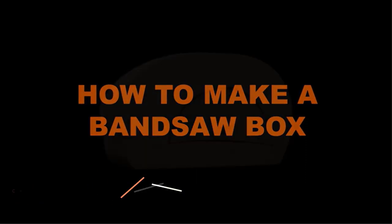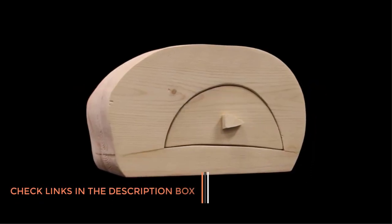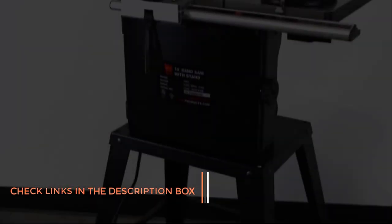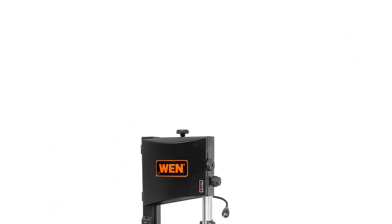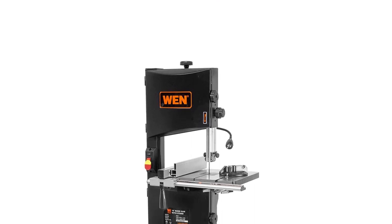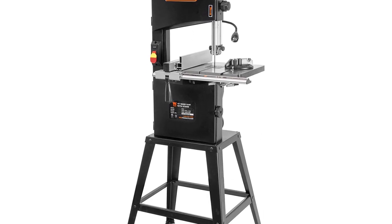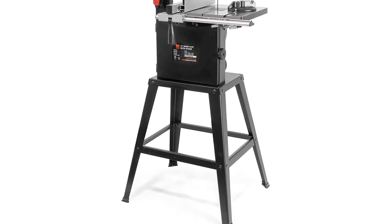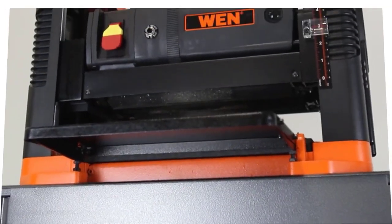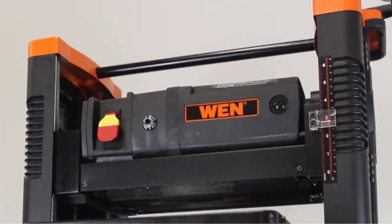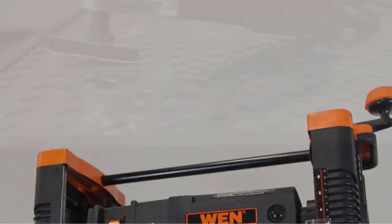It has a beveling table up to 45 degrees and a workspace size of 14 1/8 x 12 1/2 inches. This unit accommodates up to 72-inch blades with 1/8 to 1/2 inch sizes. Weighing 73 pounds, this band saw has overall dimensions of 20 x 25 x 58 inches, with a cutting capacity of 6 inches depth and 9 3/4 inches width.